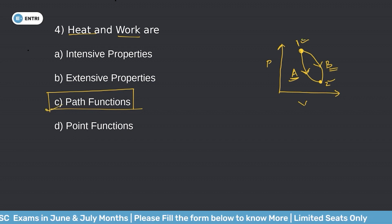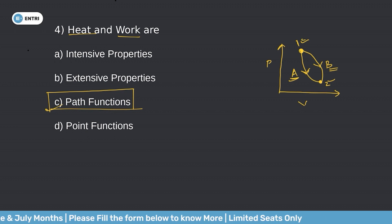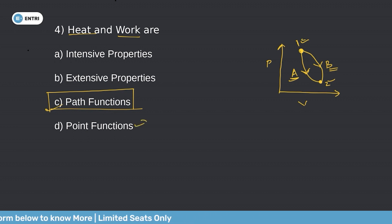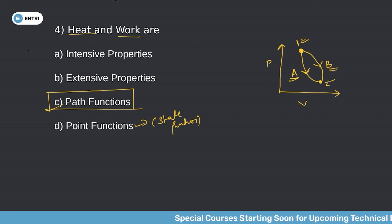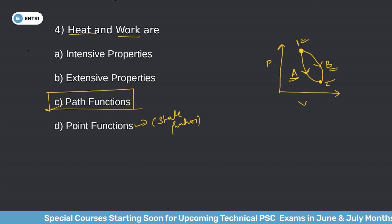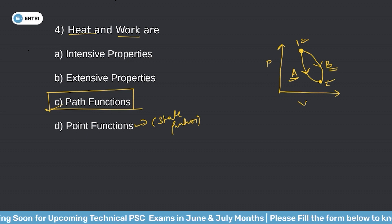In contrast, point functions — also called state functions — do not depend on the path followed; they only depend on the initial and final states. Whether you go from state 1 to state 2 via path A or path B, point functions give the same value.